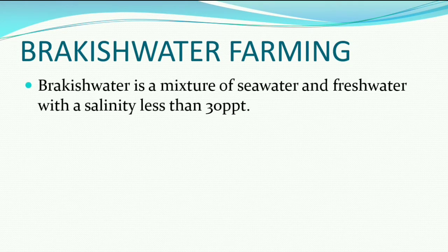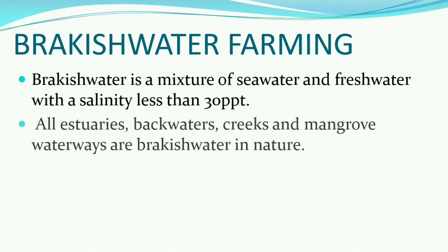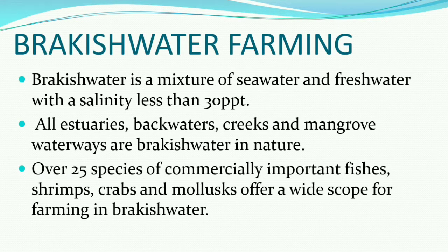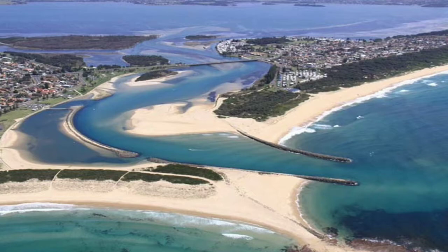Brackish water is a mixture of sea water and fresh water with a salinity less than 30 ppt. All estuaries, backwaters, creeks, and mangrove waterways are brackish water in nature. Simply, when the sea meets the river, a brackish water zone is always formed. Over 25 species of commercially important fishes, shrimps, crabs, and mollusks offer a wide scope for farming in brackish water. In this photo, you can see the sea getting connected to a fresh water lake or river, forming estuaries or lagoons.